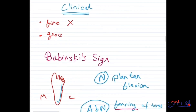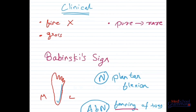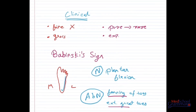One more important point: clinically, pure corticospinal tract lesions are very rare, because the extrapyramidal tracts are very closely associated with the pyramidal tracts. If there is a lesion affecting the pyramidal tract, the extrapyramidal tracts will be affected as well. Pure pyramidal tract lesions are only seen in experimental animals, not in real-life clinical scenarios. With this, we complete the pyramidal tracts.